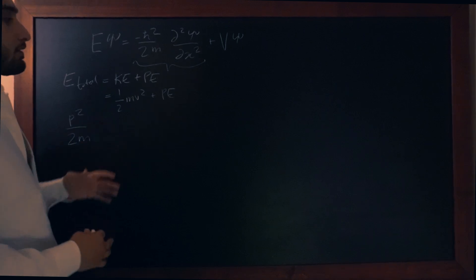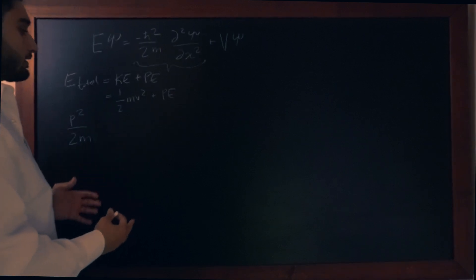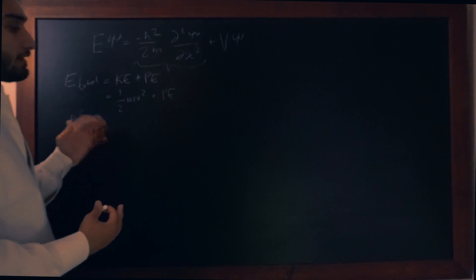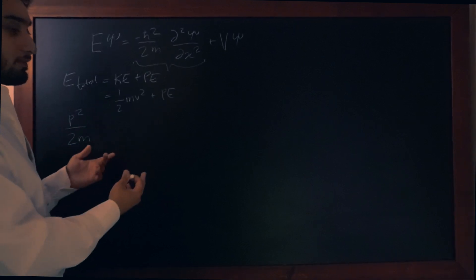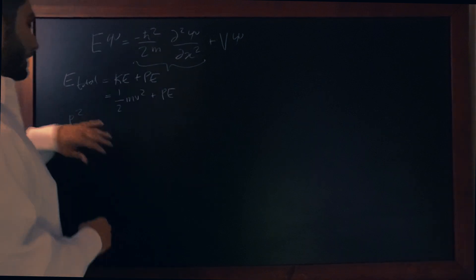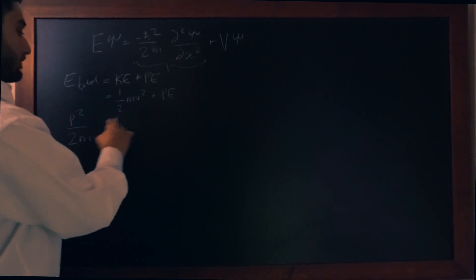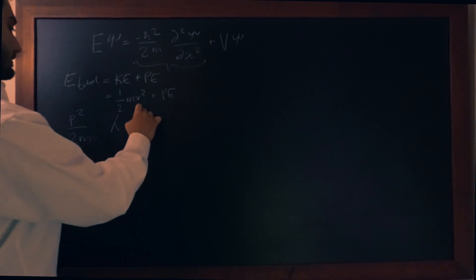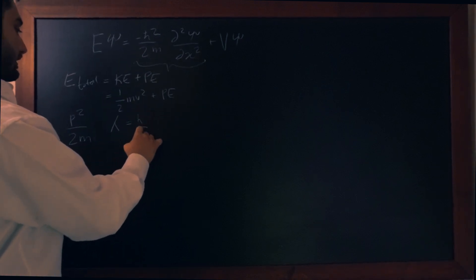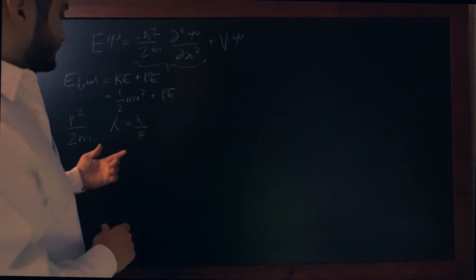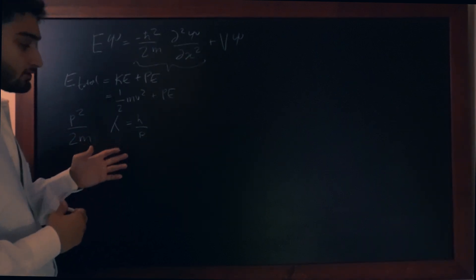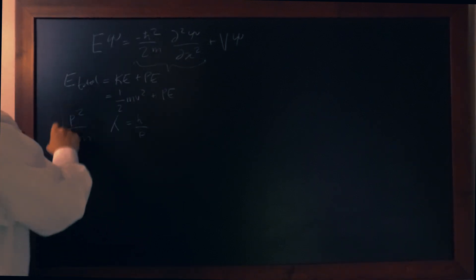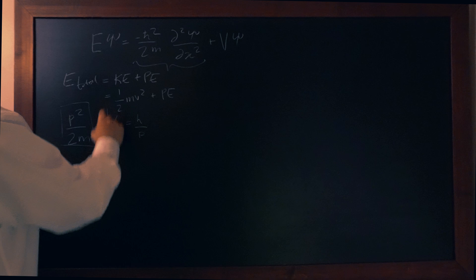So the next part we're going to talk about is the de Broglie relationship. And the de Broglie relationship relates the wavelength of a particle to its momentum. So we can write the wavelength using this lambda term, and we're going to say that it is the Planck's constant over the momentum. And so de Broglie related the mass of a particle to the wavelength of that particle.